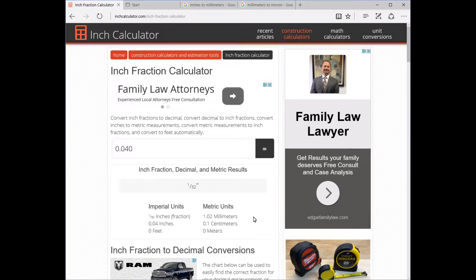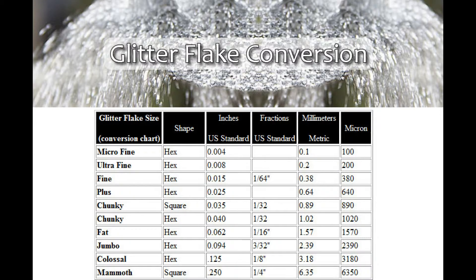The original inch calculator, which gives you just about everything except microns, was on inchcalculator.com. All of these are completely free and extremely handy. Now, the glitter flake conversion chart you're seeing on screen right now shows what we call each size and generally what the industry calls it in the first column — micro fine, ultra fine, fine, and so forth. The next column is the shape of the glitter, like hex or square.